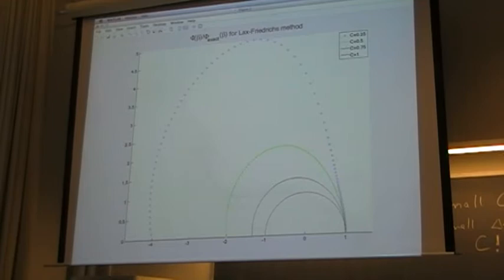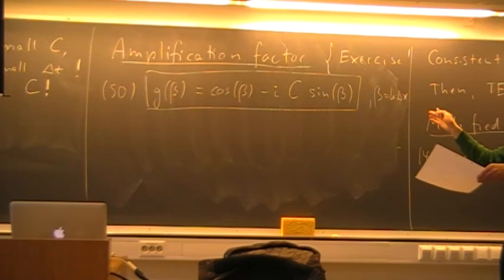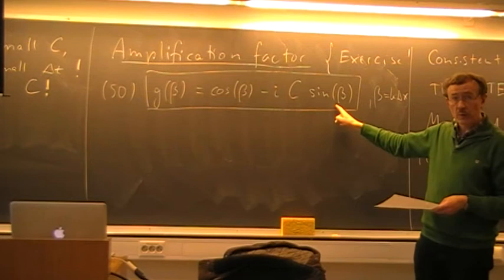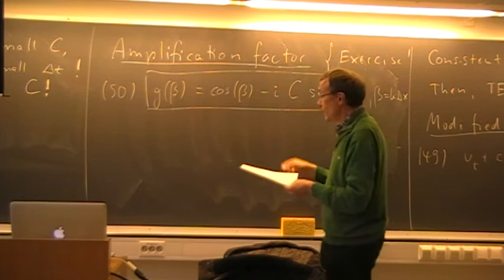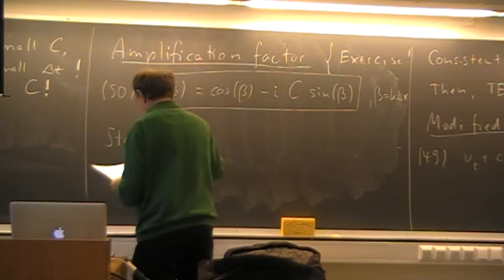The method is stable for the absolute value of the Courant number smaller than or equal to one. We can show this from the amplification factor: the modulus squared is cosine²(β) plus C²·sine²(β), and the absolute value of C must be ≤ 1 for that to be ≤ 1.